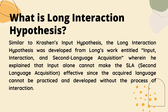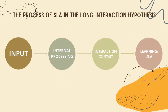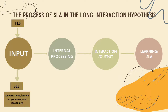Similar to Krashen's input hypothesis, the long interaction hypothesis was developed from Long's work entitled Input, Interaction, and Second Language Acquisition, wherein he explained that input alone cannot make SLA effective since the acquired language cannot be practiced and developed without the process of interaction. We have here a figure that shows the process of SLA through the long interaction hypothesis. The process starts with input wherein the second language learners are exposed through various sources — it may be in a form of conversations, lessons on grammar, and vocabulary provided by the target language speakers.